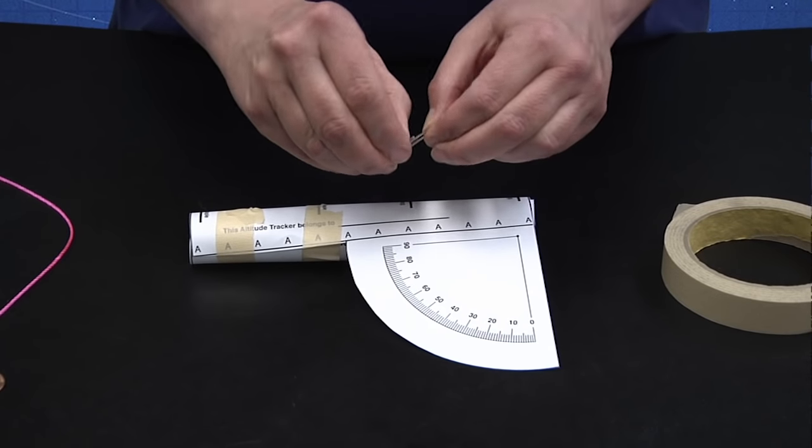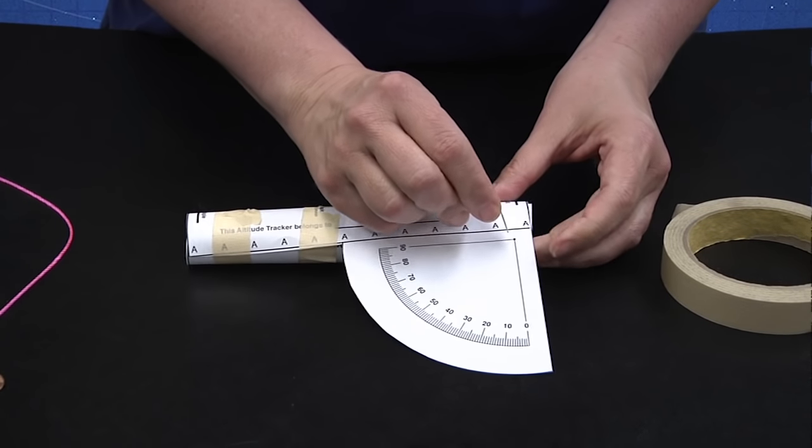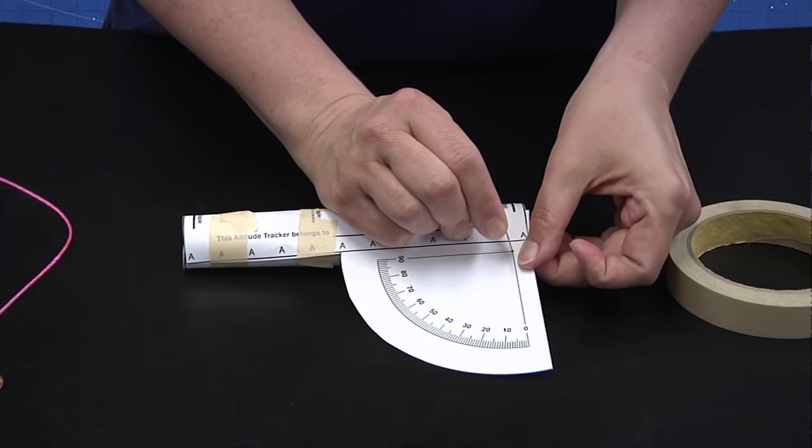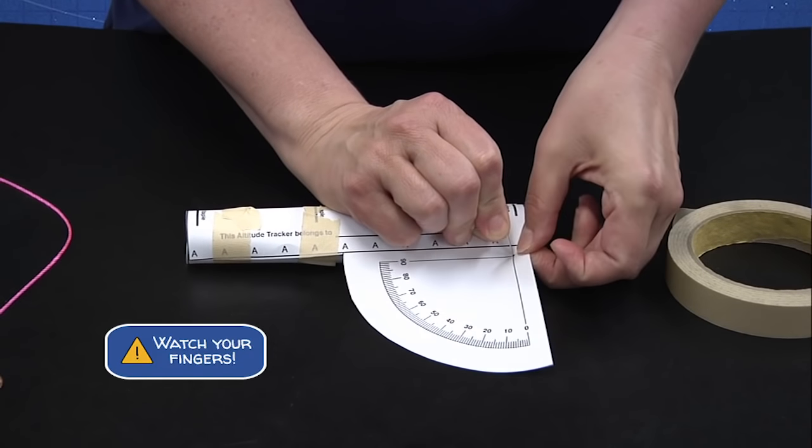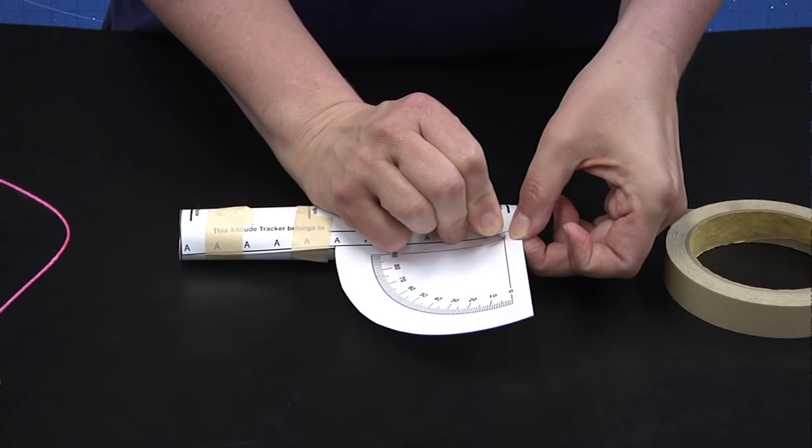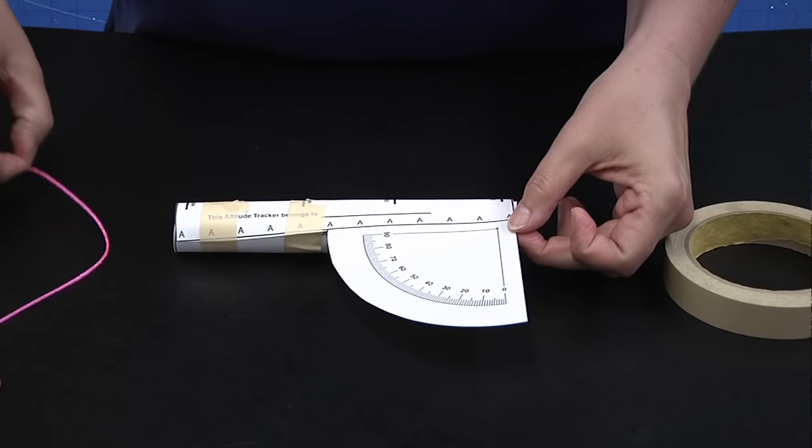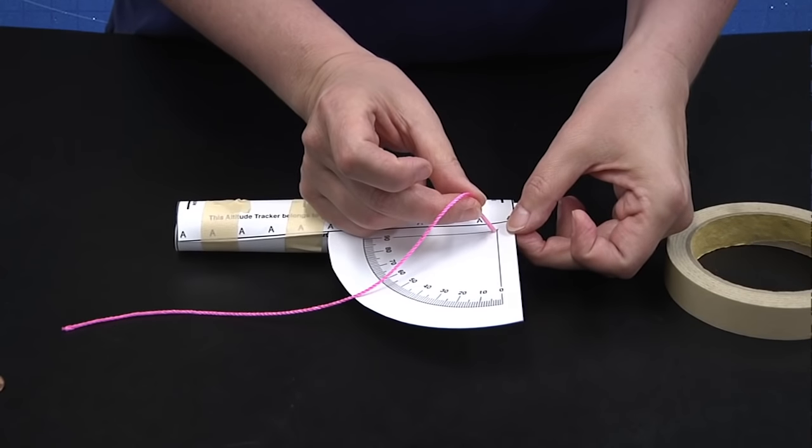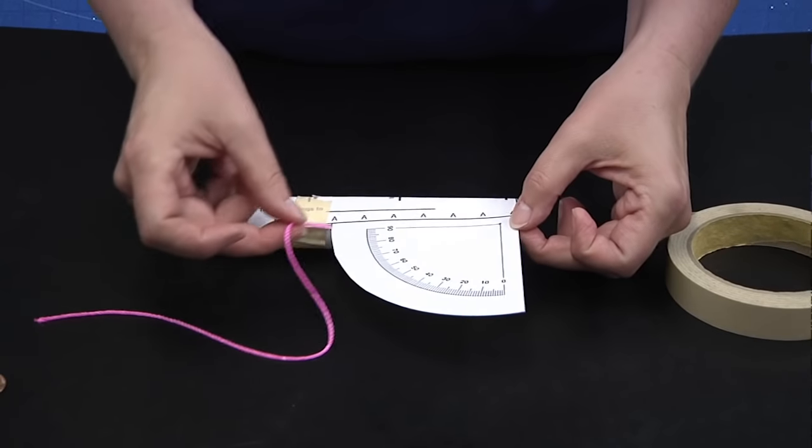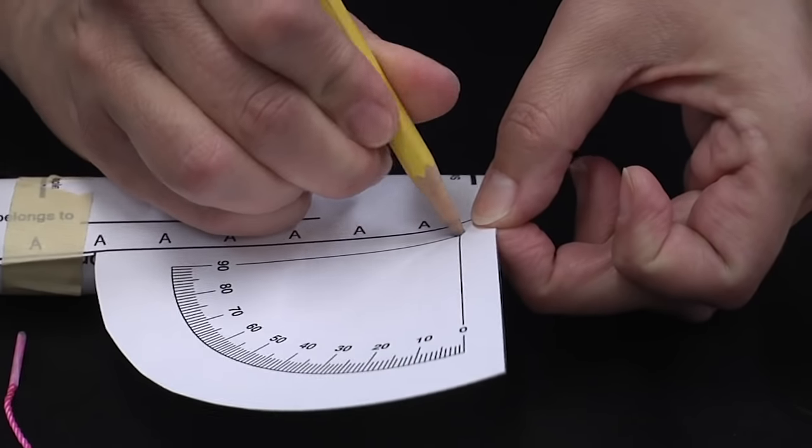At the corner of this protractor, there's a little black dot. You need to poke a hole in that little black dot using your paper clip, and then we're going to stick our string through that hole. If you need to make your hole a little bit bigger for your string, use a pencil. Just open it up a little bit.